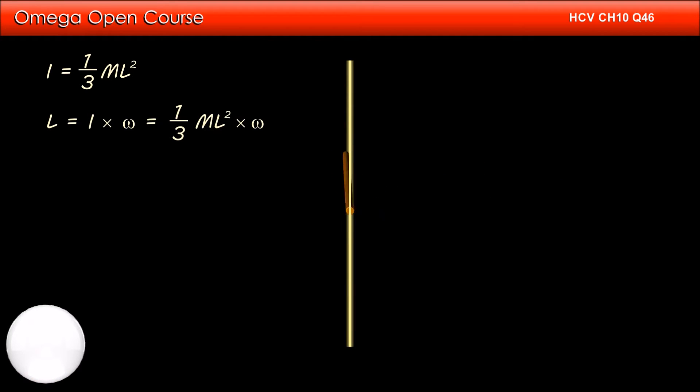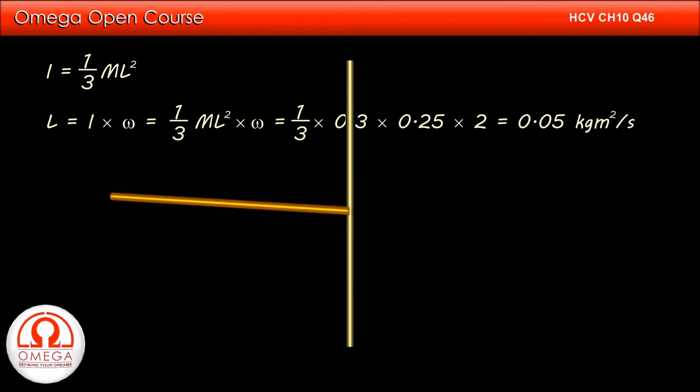Thus the angular momentum is equal to (1/3)ML²ω. Putting the values, we get (1/3) × 0.3 × 0.25 × 2. Simplifying, we get 0.05 kg·m²/s. This is the answer to part A of the question.